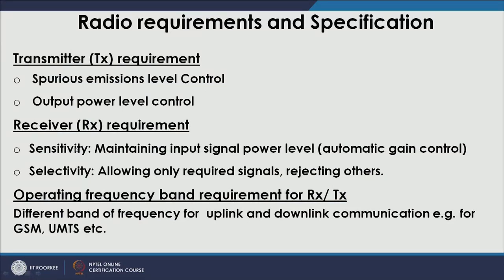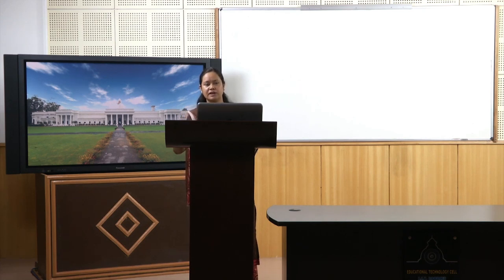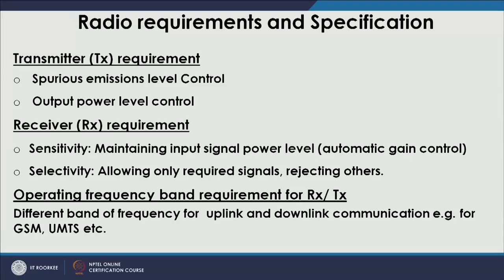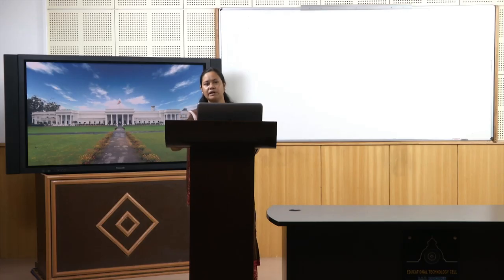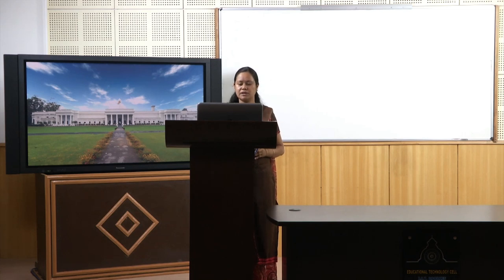On the receiver side, there are two main criteria: sensitivity and selectivity. Sensitivity means maintaining input power level so that our ADC is able to detect the signal in the lock domain properly and convert it into the digital domain. Selectivity allows capturing the proper signal among many signals at other frequencies — it should allow the signal you want at a particular band and reject the others. Transmitter and receiver should also be synchronized and know their operating frequencies to choose their filters and other components.